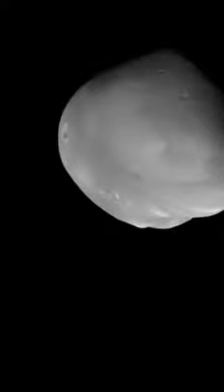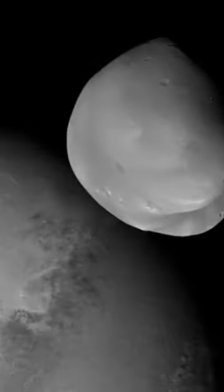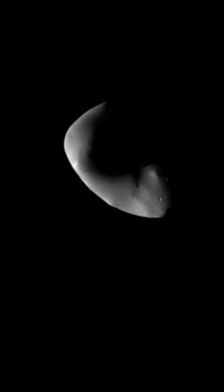This breathtakingly close approach has yielded stunning images and unprecedented insights into the moon's true origins. The HOPE Orbiter captured striking visuals and conducted ultraviolet and infrared observations, unveiling previously uncharted regions of Deimos with extraordinary detail.